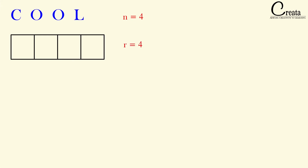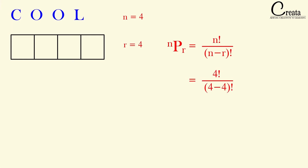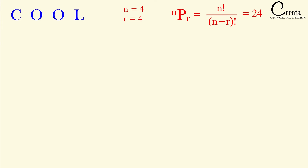So N equals 4 and R equals 4. Let's apply our formula of permutation. That will be equal to N factorial upon N minus R factorial. Putting the values, we got our answer as 4 factorial, that is 24. Now the question is: is the answer 24 correct or not? Let's see what the point of concern is.